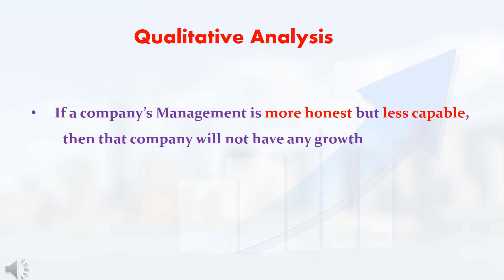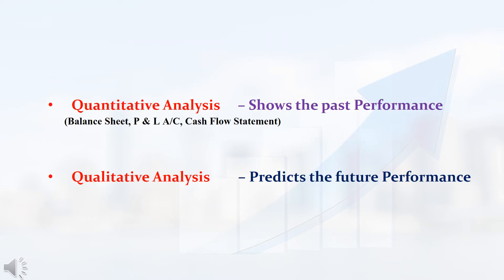At the same time, let me assume one more company that is more honest with their shareholders, but that management has less capability. Then better avoid this type of company also, because you may not get good profit. Always check both things — whether the company is honest as well as capable. Warren Buffett always gives high importance to qualitative analysis over quantitative analysis, because using balance sheet, profit and loss account, and cash flow statement, we can easily find out how the company performed in the previous year. But using qualitative analysis only, we can find out how the company will perform in the future.